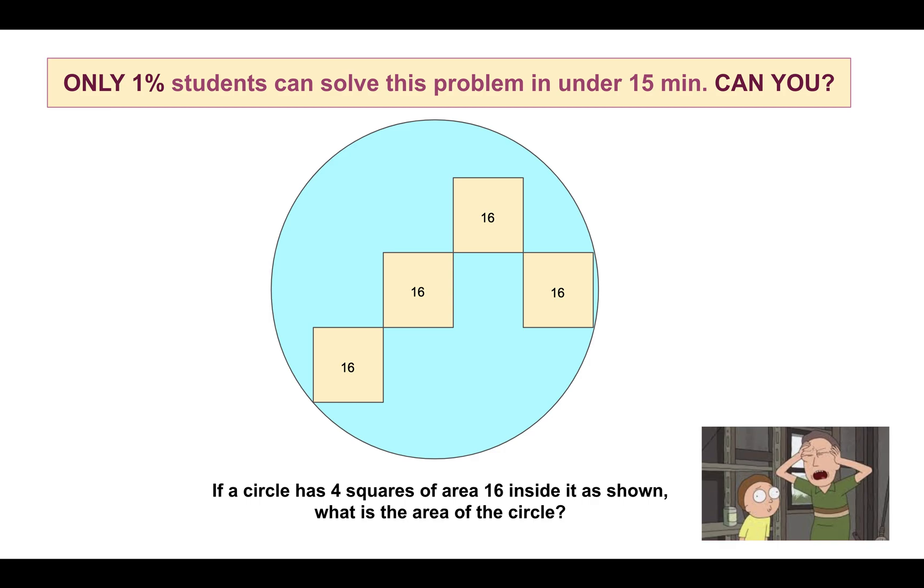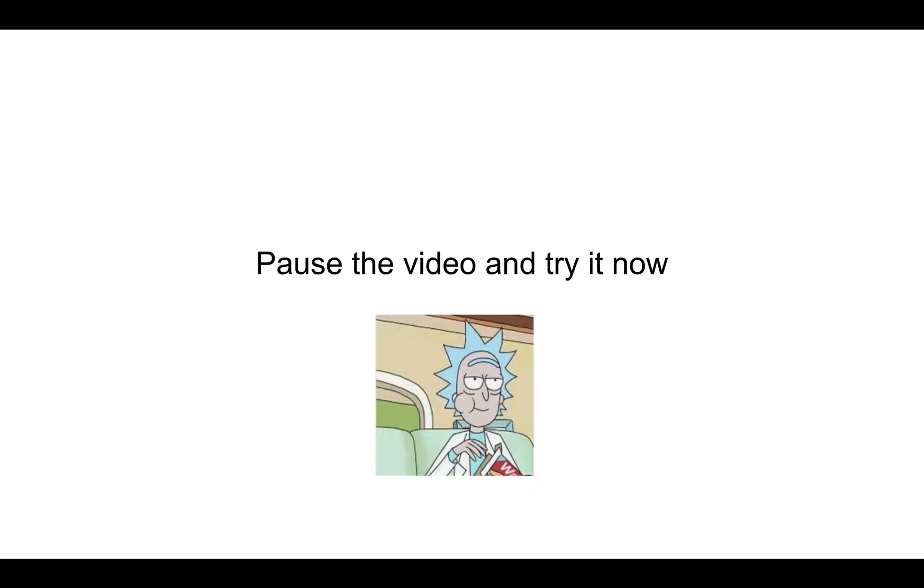As you can see, the problem is displayed on the screen and the question is very simple. You can see a circle with four squares within it. If this circle has four squares where each square has an area of 16, what do you think is the area of the circle? Take your time, pause the video and try the question now.